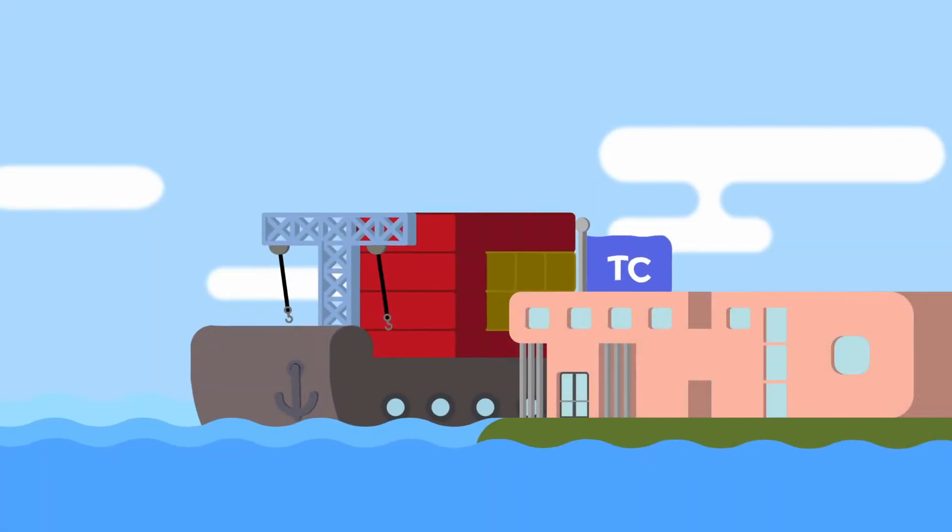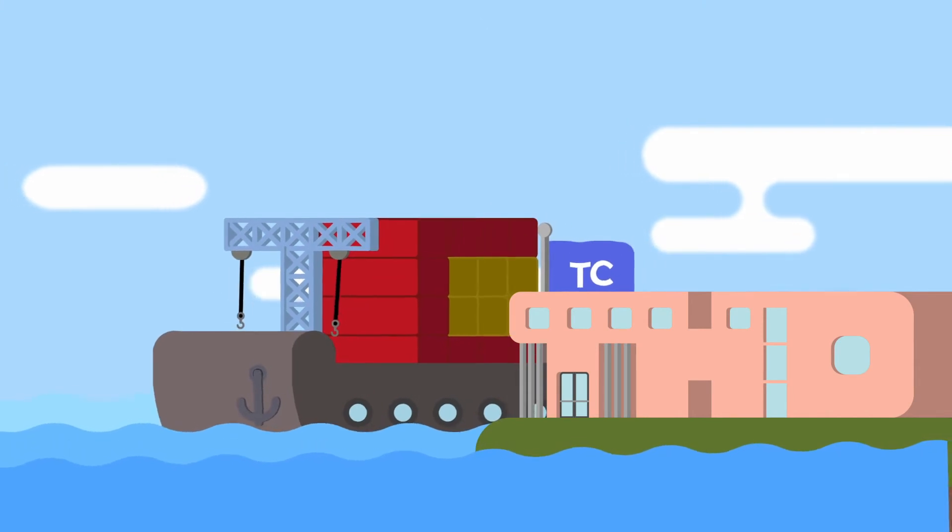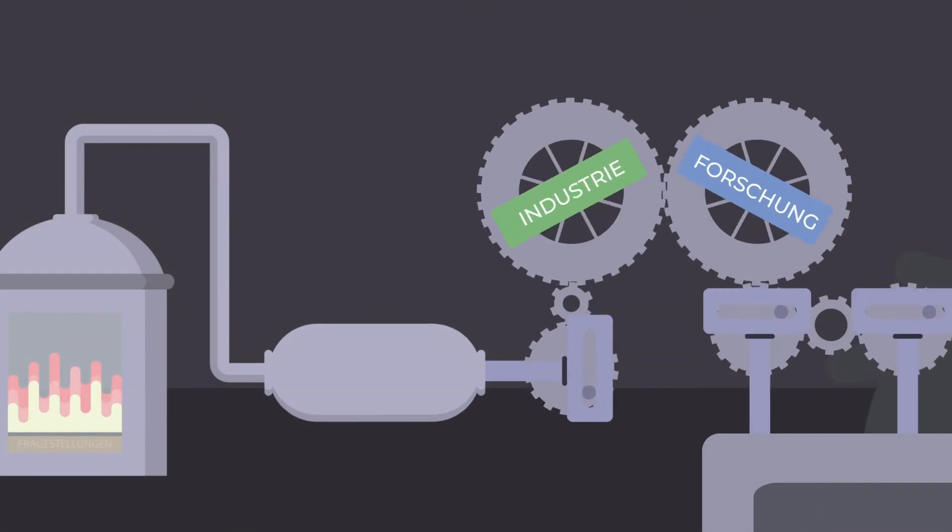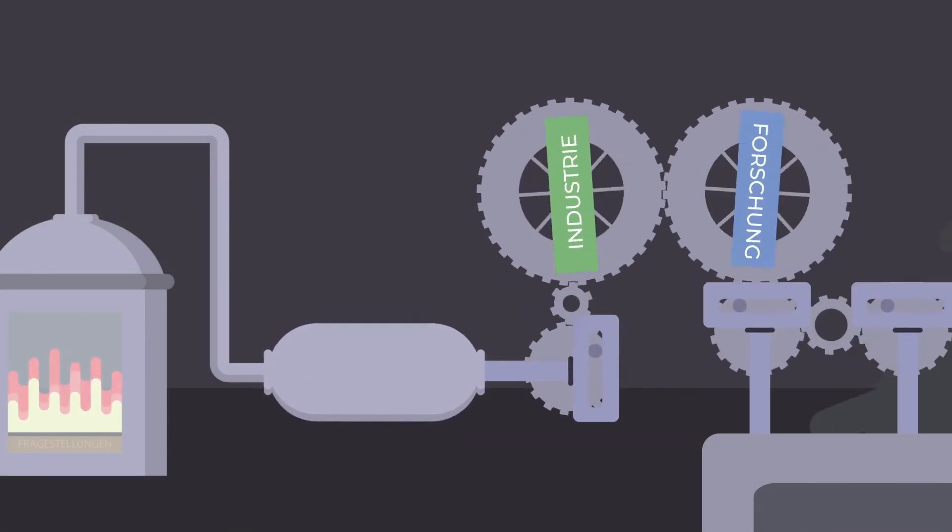A technology campus is a branch office of the university that brings the research closer to the industrial partners. Here, application-oriented, customized solutions can be developed.